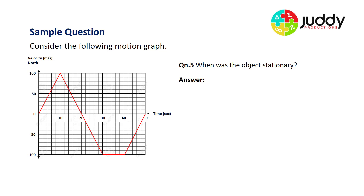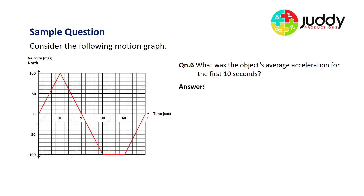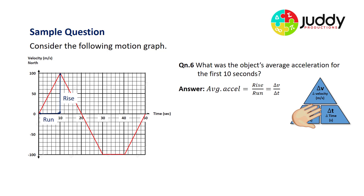Question five: when was the object stationary? This object was never stationary — it is always in motion from 0 to 50 seconds. Question six: what was the object's average acceleration for the first 10 seconds? Looking at rise over run: starts at zero and rises to 100 meters per second north — a rise of 100 over a run of 10 seconds. Average acceleration equals change in velocity over change in time: 100 divided by 10 gives 10 meters per second squared in a northerly direction.